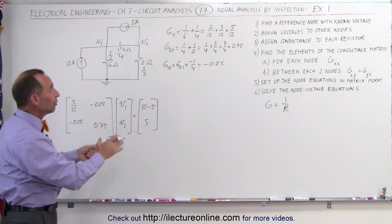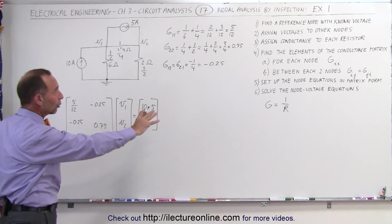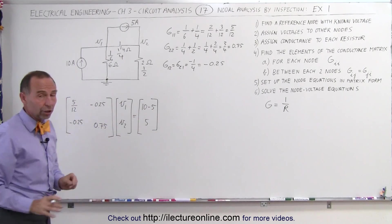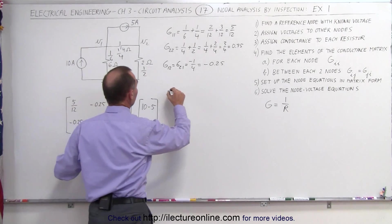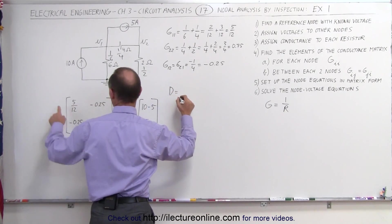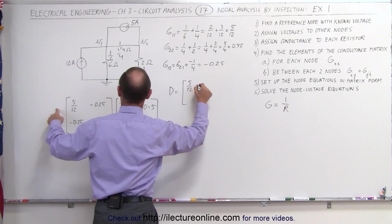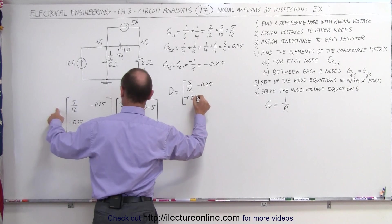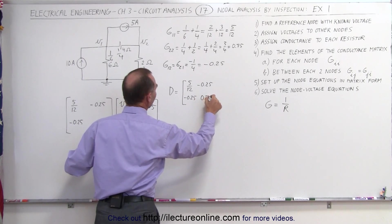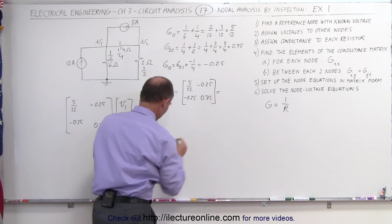The next thing to do is simply solve these equations. We have the node equations in matrix format, which is good, because now what we're going to do to solve this is first we find the determinant. The determinant is equal to 5/12 minus 0.25 minus 0.25 and 0.75. And now with a calculator.